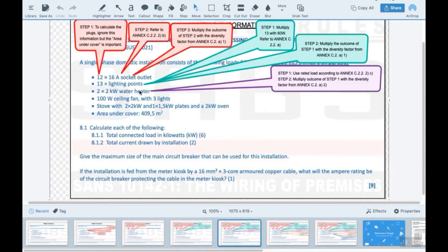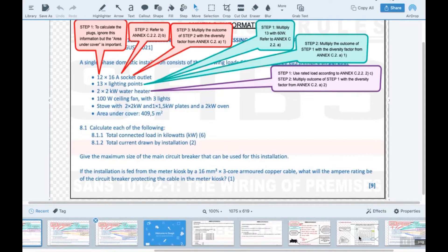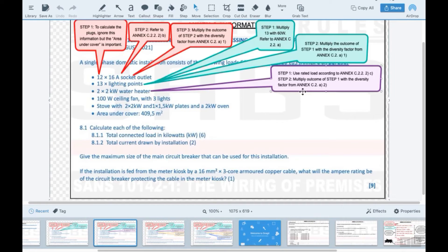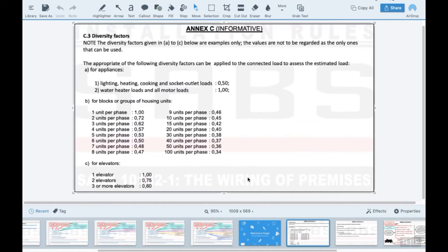Your third one would be water heater, which is your geyser. What do they say about geysers? Step one is the rated load according to Annex 2.2C. That you would find also right there from SANS for water heaters and all other equipment, the total rated load. So that's where I find that, and the diversity factor here you would find also with diversity factors.